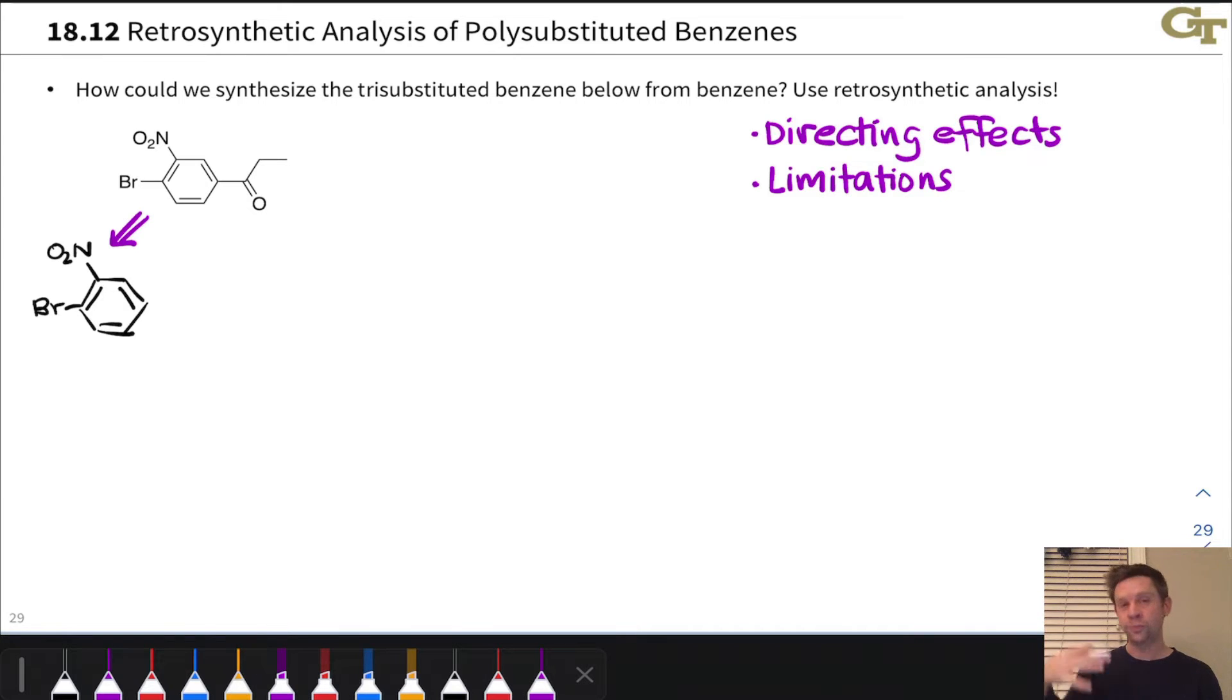Let's entertain the idea of all three, just to be very robust, very careful here. So we could remove, in the reverse direction, the acyl substituent. In the forward direction, this would correspond to Friedel-Crafts acylation as the last step of the synthesis. That's one option. We could think about installing the nitro group last, or disconnecting the nitro group first. That would involve electrophilic nitration as the last step of the synthesis.